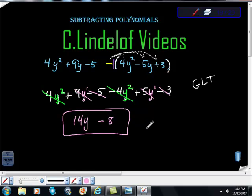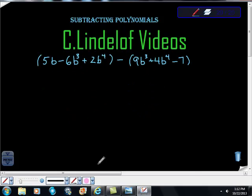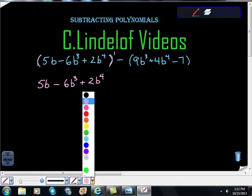All good. Should we do a second problem or is that enough? Second problem, let's go. Same thing here: parentheses here, I'm checking my parentheses. They're satisfied—this is to the first power, no number out front—so I'm just going to rewrite 5b - 6b³ + 2b⁴.